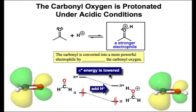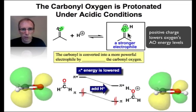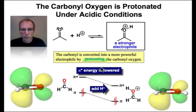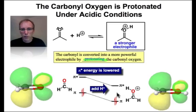Now let's see what happens when we protonate the carbonyl. When we add a proton to the carbonyl oxygen, that oxygen becomes positively charged, and the positive charge lowers the atomic orbitals of that oxygen. That lowering is reflected in π*, making it lower in energy. As a consequence, we can make a more powerful electrophile any time we protonate the carbonyl oxygen. You can see in the molecular orbital diagram how this coefficient decreases in size once that proton is added. Adding a proton lowers the LUMO and makes it a much more powerful electrophile.